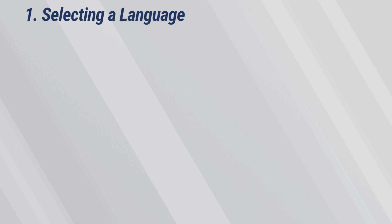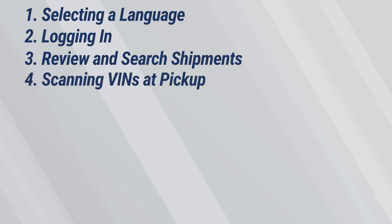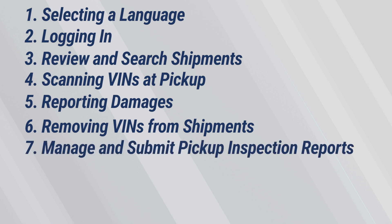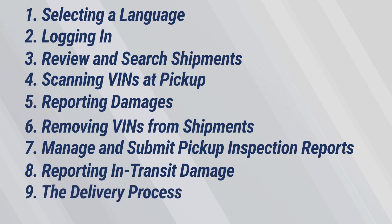Part 1 – Selecting and changing the language. Part 2 – Logging in. Part 3 – Reviewing and searching shipments. Part 4 – Scanning VINs at pickup. Part 5 – Reporting damages. Part 6 – Removing VINs from shipments. Part 7 – Managing and submitting the pickup inspection report. Part 8 – Reporting in-transit damage. Part 9 – The delivery process. And finally, Part 10 – What to do if you're going to be late for pickup or delivery.